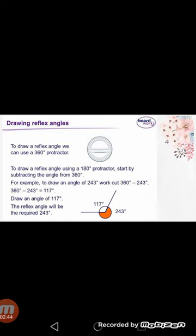Here I have one example of drawing a reflex angle. To draw a reflex angle using a 180 degree protractor, we have to draw an angle of 240 degrees. So we will subtract 240 degrees from 360 degrees and the result will be 120 degrees. Draw that angle using the protractor, and the reflex angle will be the required 240 degrees. Now mark the reflex angle — as you can see, the reflex angle is shown in red color.